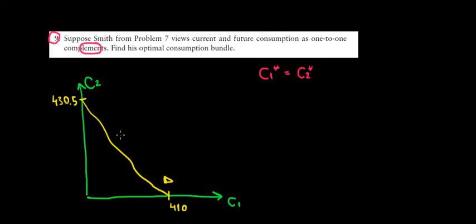Well we have to use our intertemporal budget constraint, which is this one. Now how can we write this intertemporal budget constraint? Since this is a line we can write the shape of a line. So let's do it.